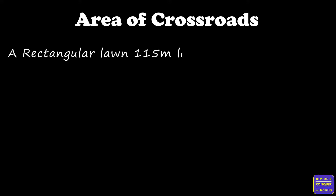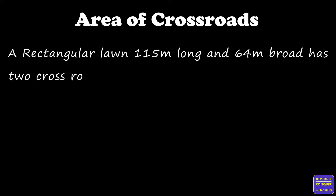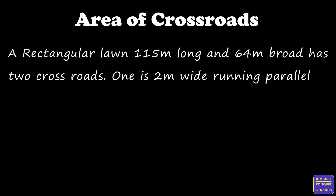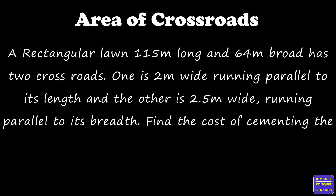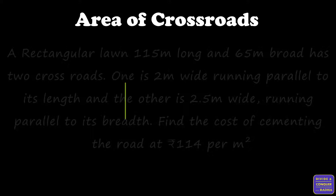A rectangular lawn 115 meters long and 64 meters broad has two crossroads: one 2 meters wide running parallel to its length, and the other 2.5 meters wide running parallel to its breadth. Find the cost of cementing the road at rupees 114 per square meter. Let's represent the given details diagrammatically.